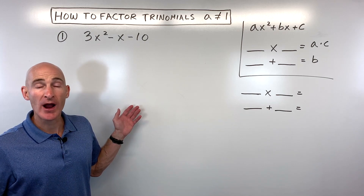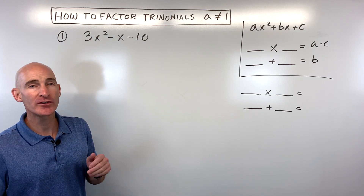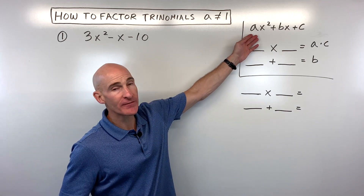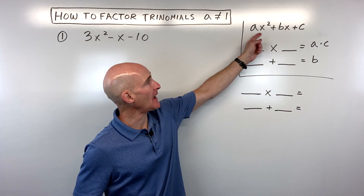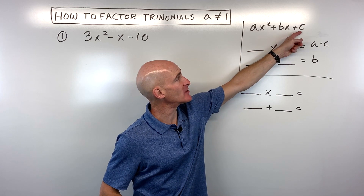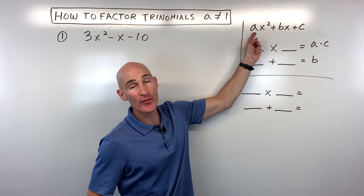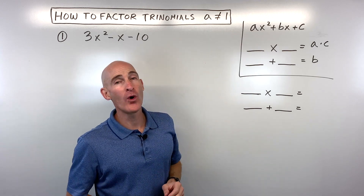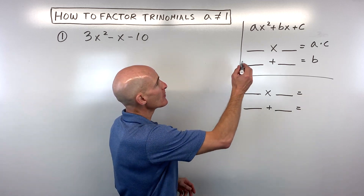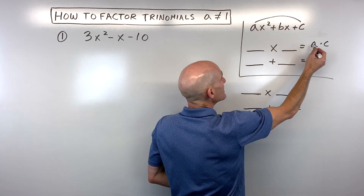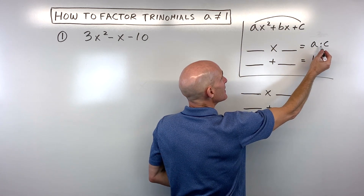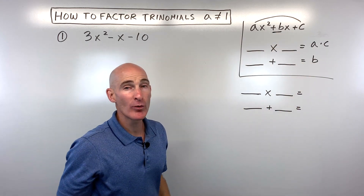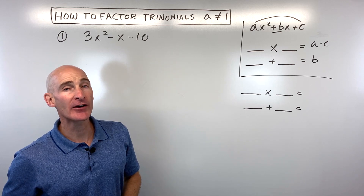In this video, you're going to learn how to factor trinomials where the leading coefficient is not 1. These tend to be the more difficult ones to factor. When it's in the form ax squared plus bx plus c, but this leading coefficient is not equal to 1, what we're going to do is find two numbers that multiply to a times c but add to the middle coefficient b, then split the middle term and factor by grouping.